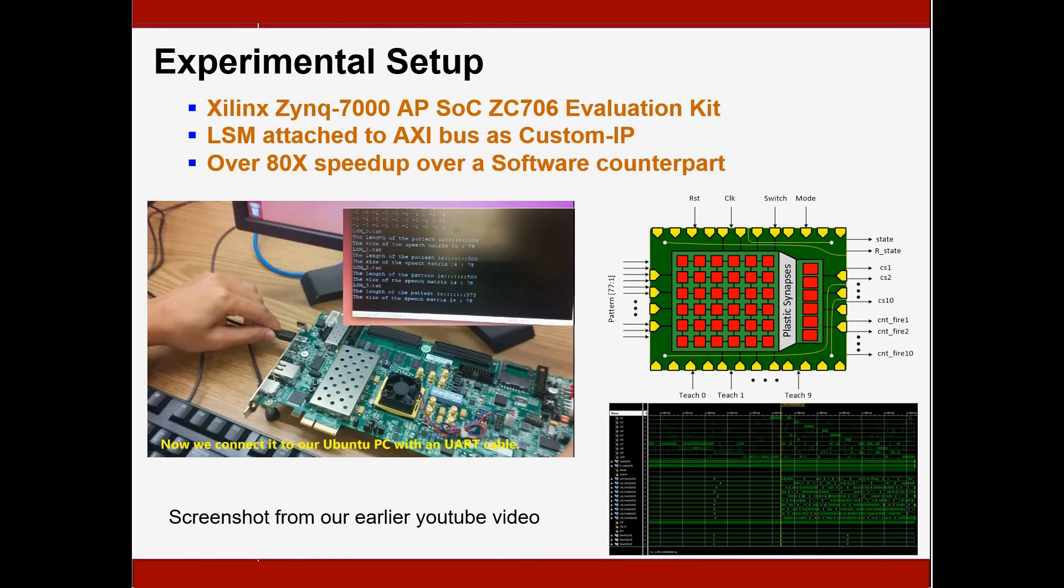In this work, we use the Xilinx FPGA as our platform. The hardware liquid-state machine is attached to the AXI bus of an SoC as a custom IP. For each benchmark, our FPGA accelerator can achieve over 80 times speed-up over a software counterpart running on a general-purpose CPU of 2 GHz. This is really fast due to our highly parallelized implementation. And the following figures show the experimental setup and the signals of our liquid-state machine IP core.